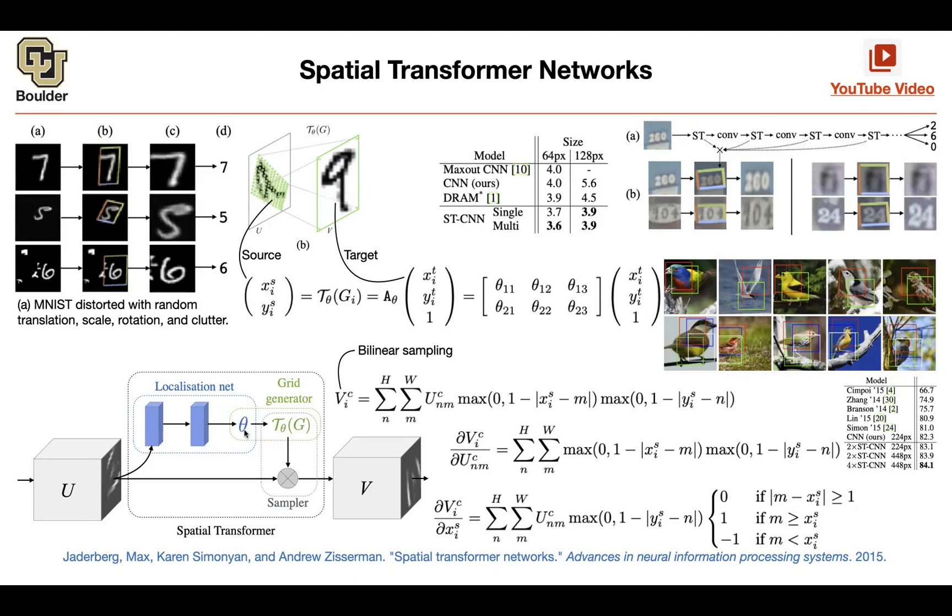We're going to see this idea of having a change of coordinate—a neural network, a small neural network, a localization net that is doing a change of coordinate. We're going to see that later on when we do object detection and even further down the road when we deal with 3D objects. Any questions about spatial transformer networks?